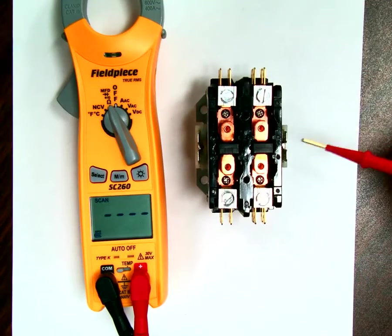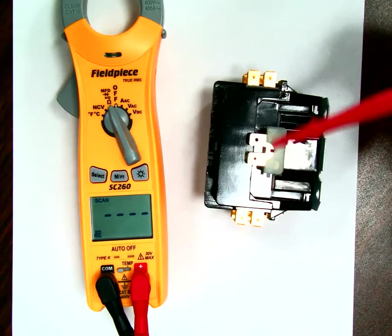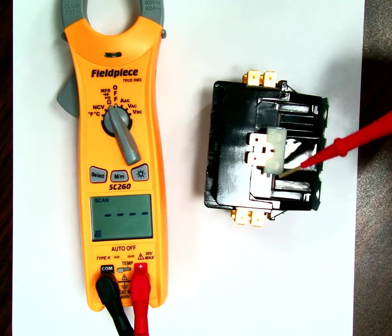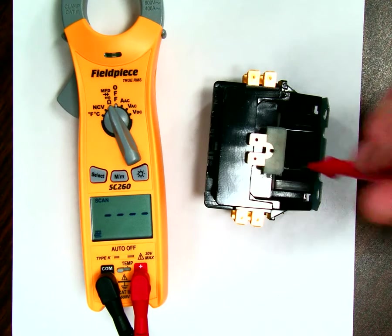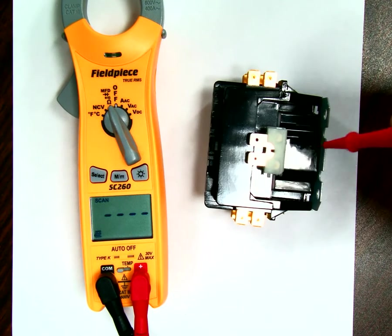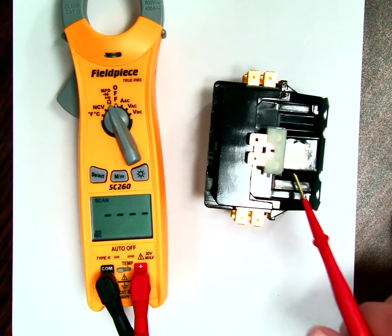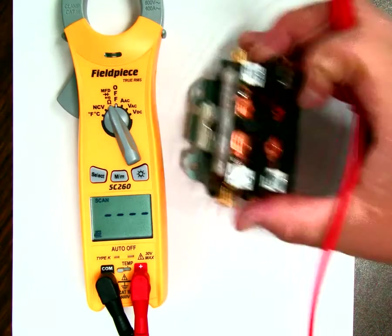But now if I'm going to flip the contactor over, you see this right here? This is connected to one side of a coil that's internal inside here, inside this contactor. If I flip it over, you'll see the same thing.